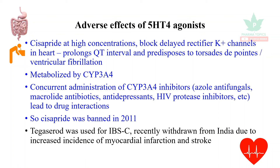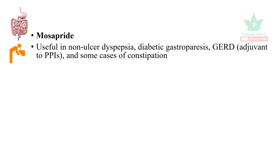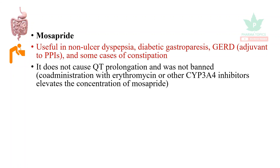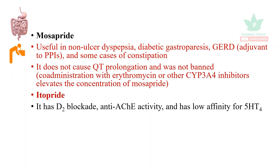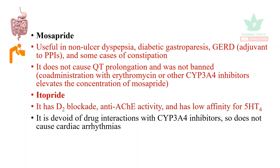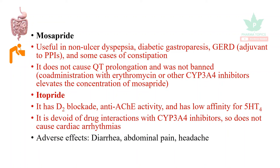Tegaserod was recently withdrawn in India due to increased incidence of myocardial infarction and stroke; it was approved for constipation-predominant irritable bowel syndrome. Mosapride is useful in non-ulcer dyspepsia, diabetic gastroparesis, GERD as an adjuvant with proton pump inhibitors, and some cases of constipation. It does not cause QT prolongation and was not banned, though co-administration with erythromycin or other CYP3A4 inhibitors can elevate mosapride concentrations. Itopride has D2 blockade activity, anti-acetylcholinesterase activity, and low affinity for 5-HT4 receptors. It is devoid of drug interactions with CYP3A4 inhibitors and does not cause cardiac arrhythmias. Adverse effects include diarrhea, abdominal pain, and headache.